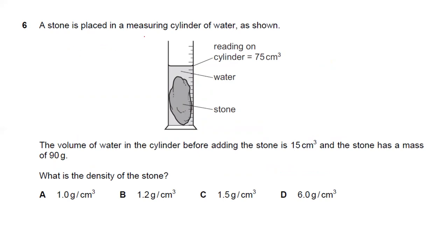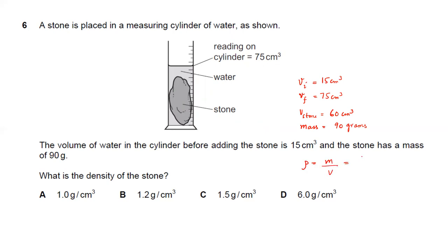Question six: a stone is placed in a measuring cylinder of water. The initial volume of water was 15 cm³ and the final reading is 75 cm³, so the volume of the stone is 60 cm³. The stone has a mass of 90 g. Density equals mass per unit volume: 90 divided by 60 equals 1.5 g/cm³. Answer C is the right answer.